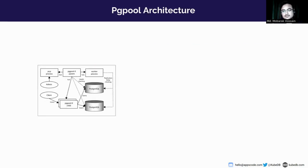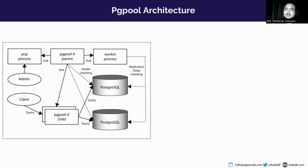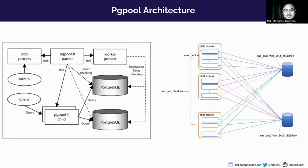Now we'll briefly discuss about PGPool architecture. Here in this picture we can see the architecture of PGPool. For a specific task, PGPool has a specific process. Initially, PGPool has the main parent process, and then the parent process forks three types of processes: one is the PCP process, another is the worker process, and the last one is the child process.